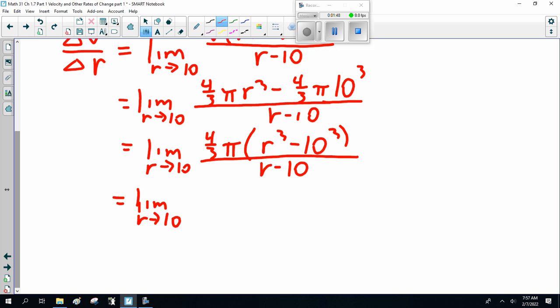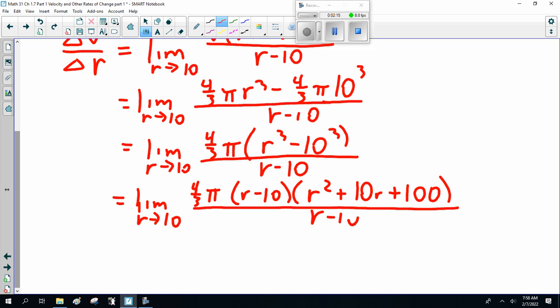And notice I'm not multiplying 10 by cube because I have a difference of cubes. Now, if you don't see that, then you got to multiply some crap out and it gets long. That would be r minus 10 times r² plus 10r plus 100. Now, the reason I do that is because, of course, my denominator is a restriction. I cannot have r equal 10. r minus 10 cancels out.